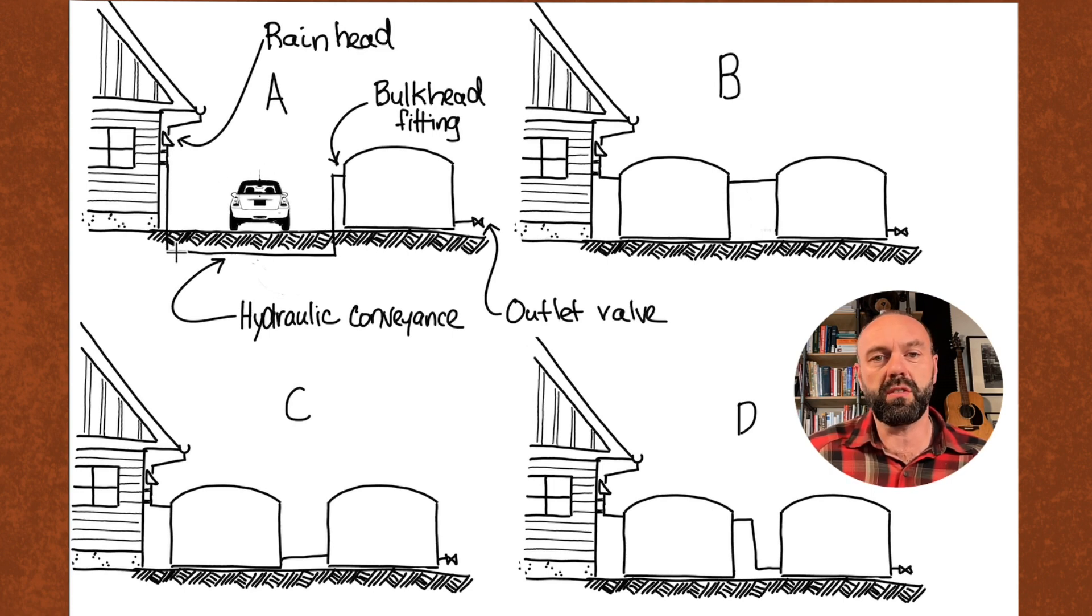So there's some pros and cons to hydraulic conveyance. Number one is you can pretty much move the water as far away as you want, as long as the inlet of the tank is lower than the inlet of the rain head. That's kind of cool.